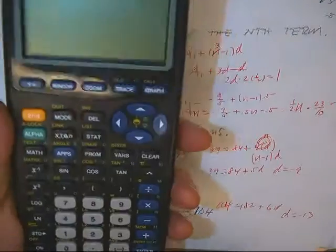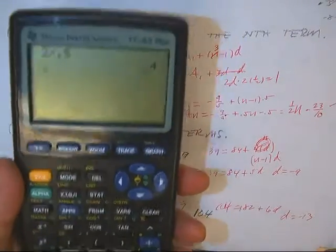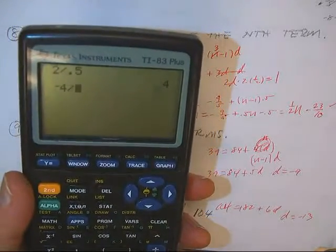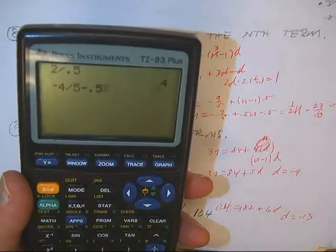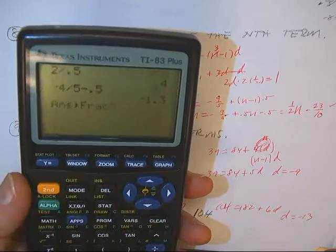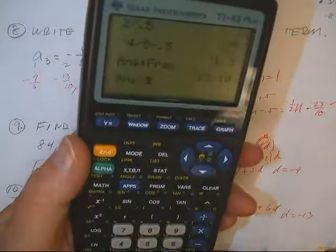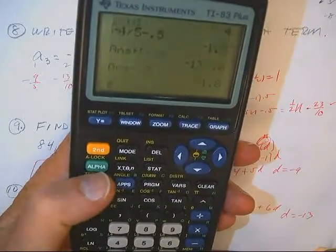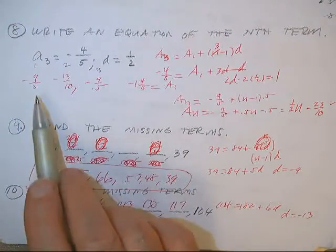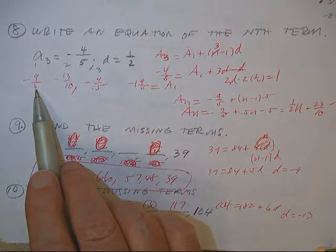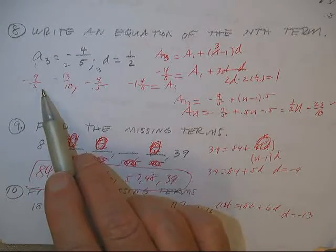It's really pretty easy. It's going to be negative 4/5. Watch this one. Negative 4/5 minus 1/2 equals negative 13/10. That's that one. Minus 1/2 equals negative 9/5. That's that one. So there's my first term right there.